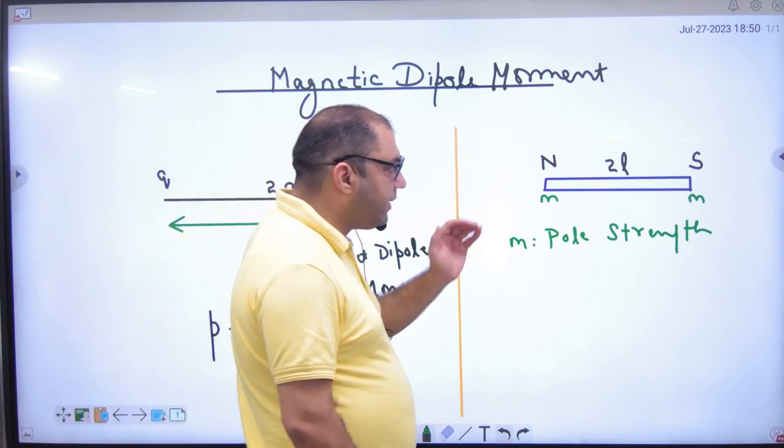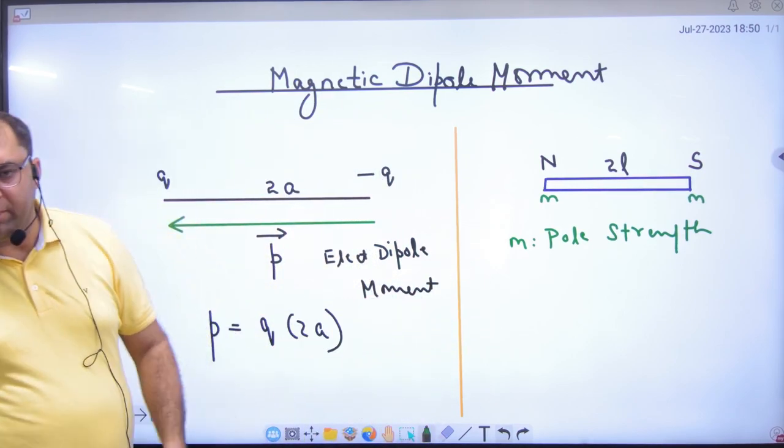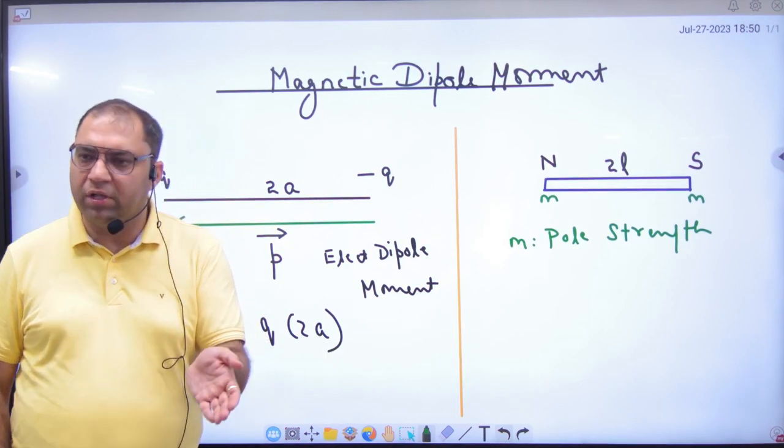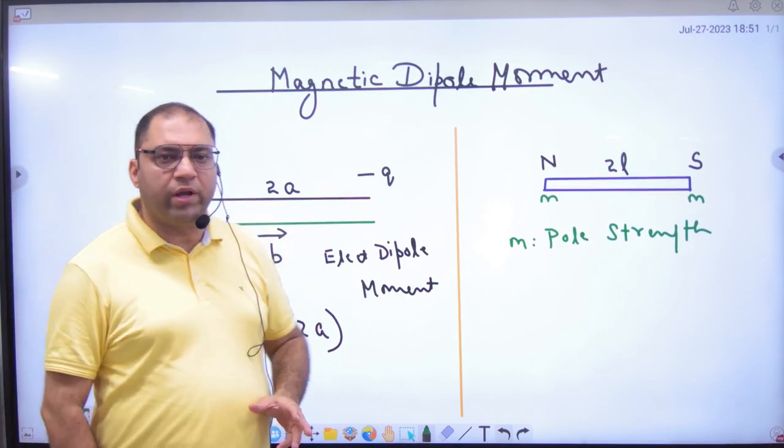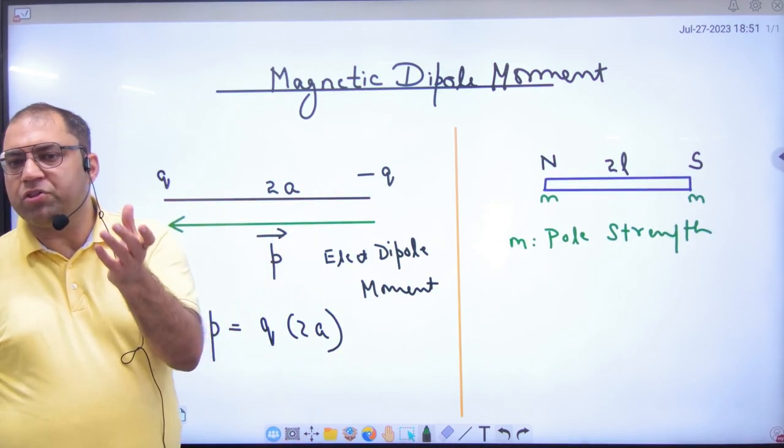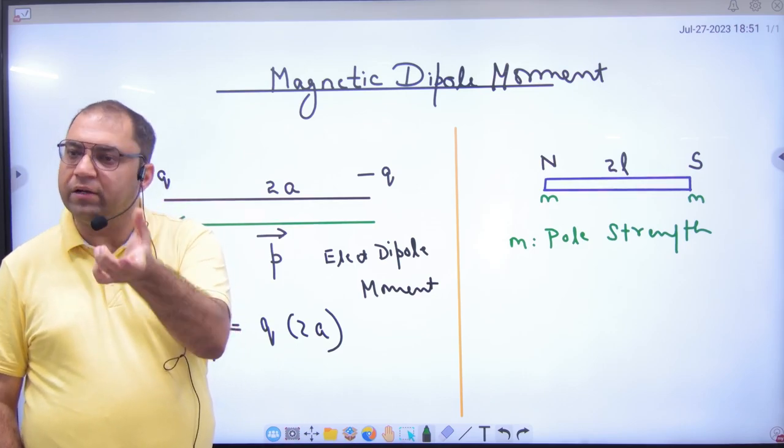So, the first case is clear. Pole strength is given. Now, in this magnet or in this dipole, in this combination, North and South poles are separated by a very small distance. They are very small. So, what do we call this combination? Magnetic dipole.